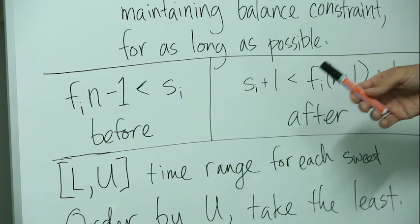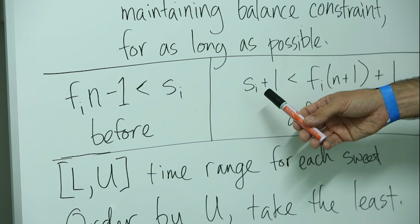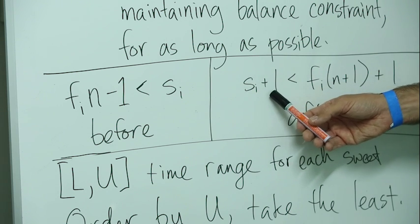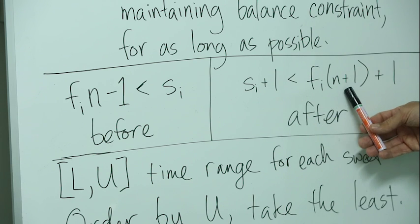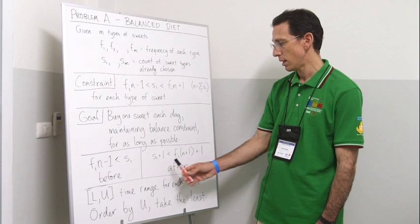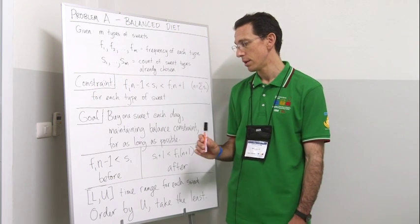After he chooses a sweet, in particular sweet S_i, the number of sweets that he has chosen of this type goes up by one, and the total number of sweets goes up by one, and this must be maintained. So this being the upper part of the constraint.